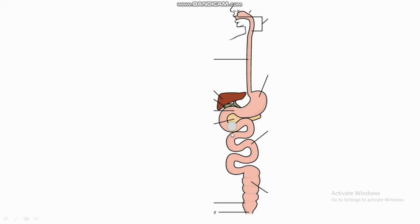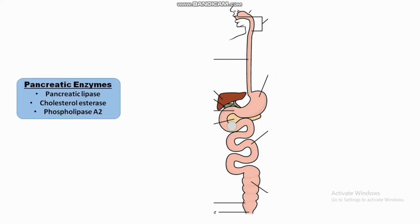Afterwards, the digestion of lipids occurs with the help of pancreatic enzymes in the small intestine. The pancreas secretes some enzymes which help in the digestion of lipids. These enzymes are pancreatic lipase, cholesterol esterase, and phospholipase A2.